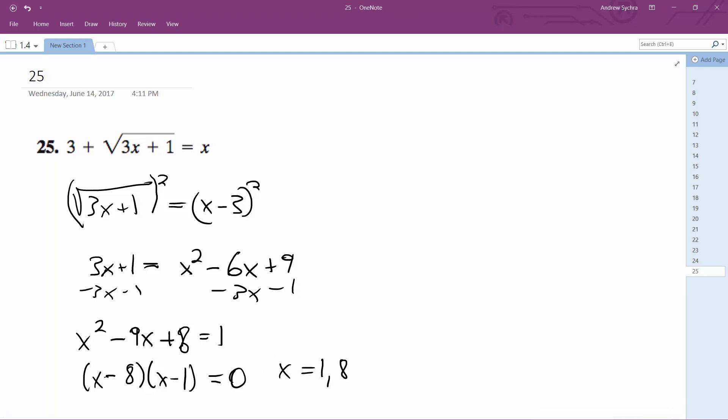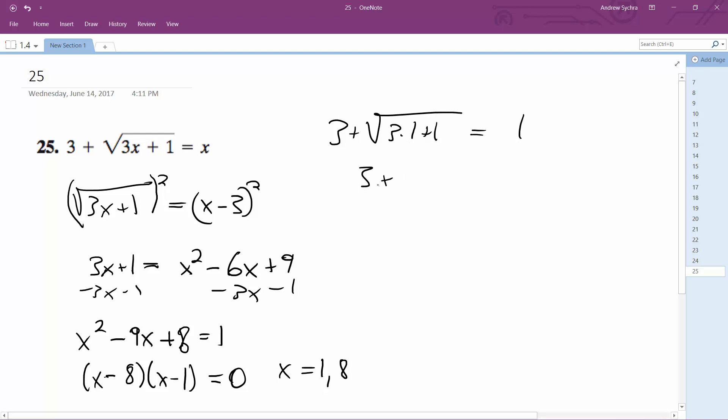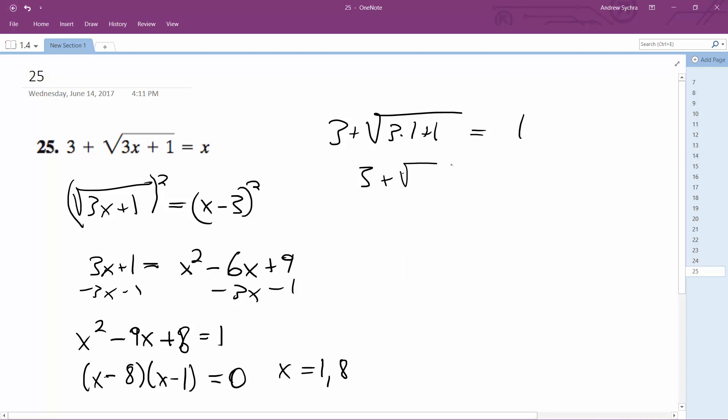And when we check, it should work, but 3 plus square root of 3 times 1 plus 1 equals 1. 3 plus square root of... let's do this, that's 4. 3 plus 2 does not equal 1, so that doesn't work.